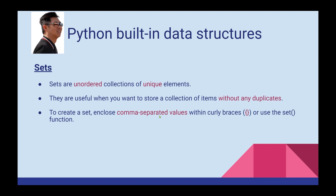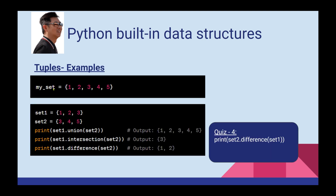You can create a set using curly braces or the set() function. For example: my_set = {1, 2, 3, 4, 5} using curly braces. For set operations, you can use set1.union(set2) — if set1 is {1, 2, 3} and set2 is {3, 4, 5}, the union gives {1, 2, 3, 4, 5}.